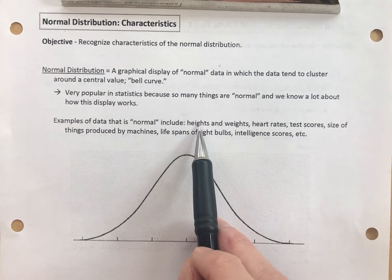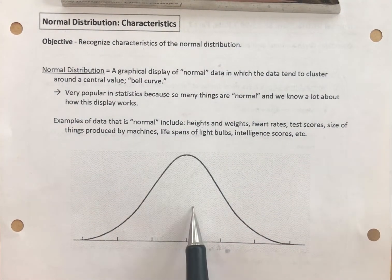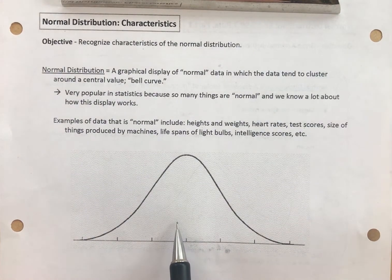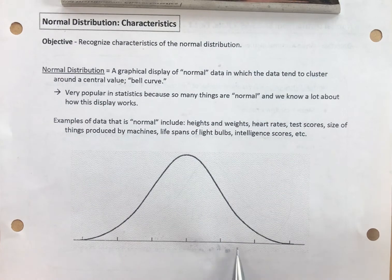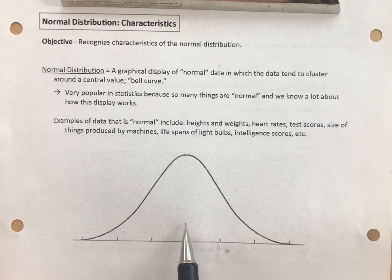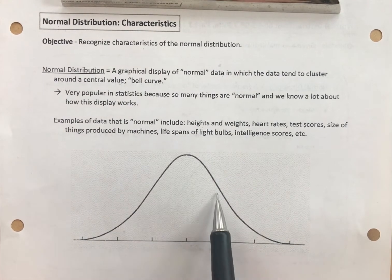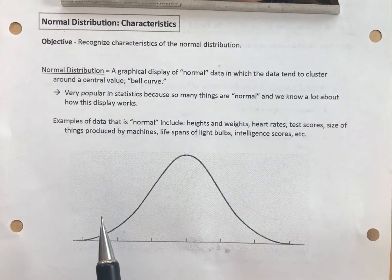Our heights as adults tend to cluster around an average height, and most of us are pretty close to that average height as an adult. Yes, there are folks that are a lot taller, and they're kind of in this wing of the bell curve. And yes, there are folks that are a fair piece shorter than the middle, but there aren't many. Most of us cluster, when we're adults, around what's considered normal.